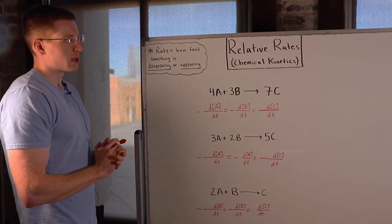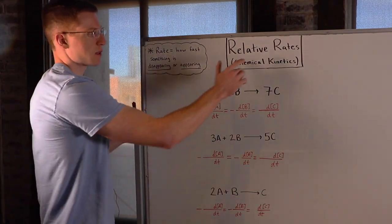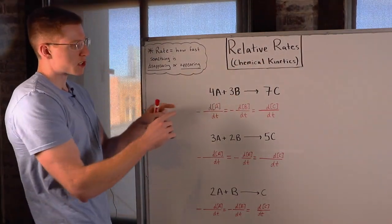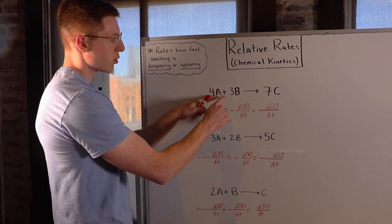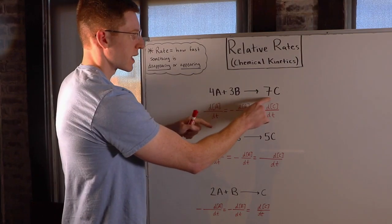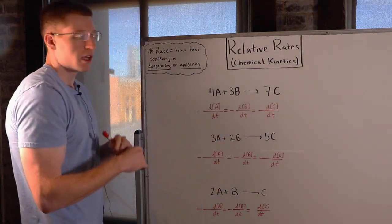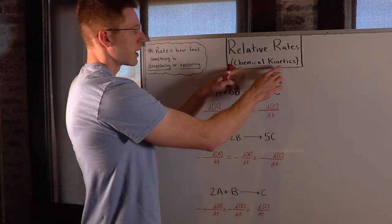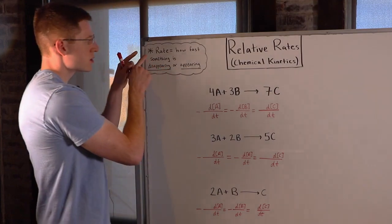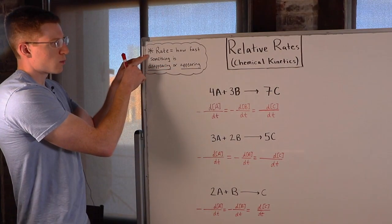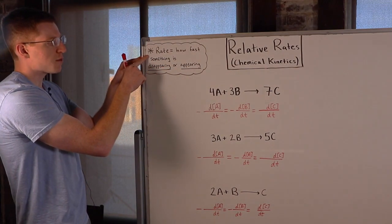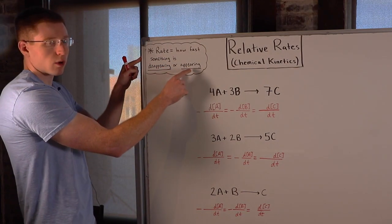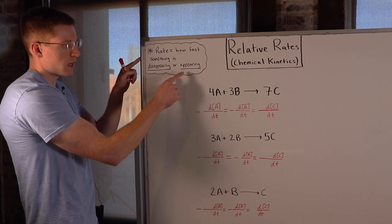In this video I'm going to show you how you can determine relative rates based on the stoichiometric coefficients of a reaction. In the context of chemical kinetics, when we use the word rate we're referring to how fast something is disappearing or appearing.